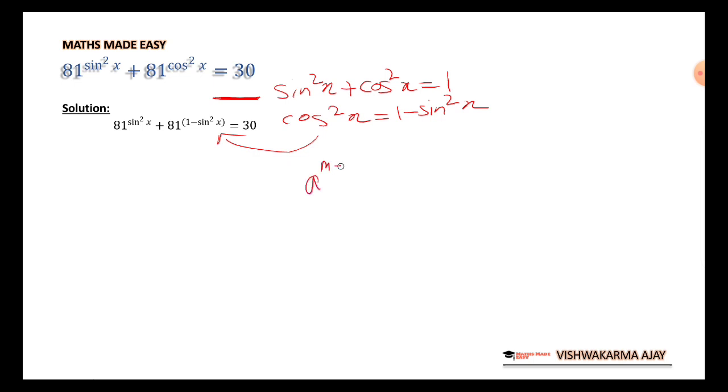A raised to m minus n, that is a raised to m upon a raised to n in this part. So, we have 81 raised to sine square x plus 81 upon 81 raised to sine square x is equal to 30. Now, for the sake of simplicity, I will substitute this part as y. 81 sin square x is equal to y.